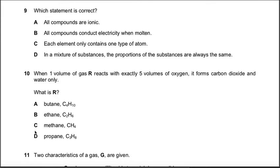Question number nine: which statement is correct? All compounds are ionic? No, some compounds are covalent, some compounds are coordinate covalent, so this is not a correct statement. All compounds conduct electricity when molten? No, covalent compounds are unable to conduct electricity. For example, diamond is unable to conduct electricity. Each element only contains one type of atom. Yes. And the third: in a mixture of substances, the proportions of the substances are always the same? Not the same. You can change the ratio in a mixture. For example, in milk you can add more and more water, and after the addition of water you will also say this is milk. So milk does not have a proper formula, not a fixed ratio. Similarly, alloys do not have a fixed ratio. In a mixture, ratio is not fixed.